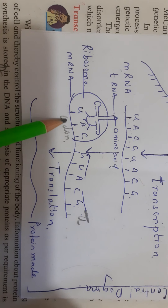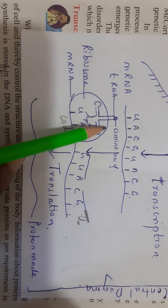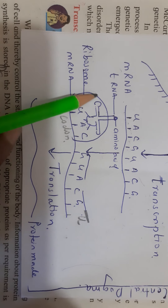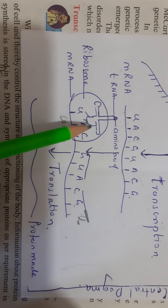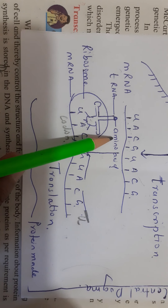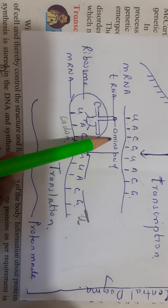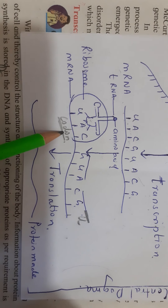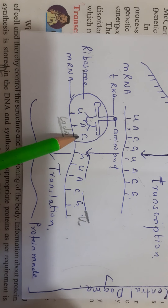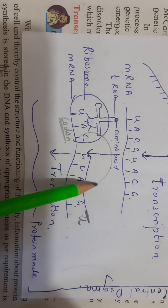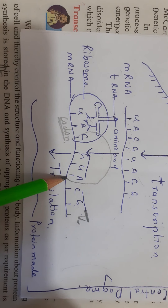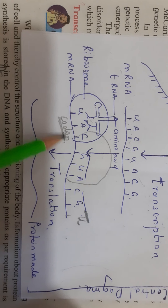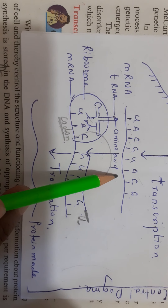On this mRNA, the ribosome will come and sit. The tRNA comes with a proper amino acid — because proteins are made up of amino acids — and it reads one codon. So one codon corresponds to one amino acid. Then the ribosome moves on to the next codon, and the next amino acid comes and joins.